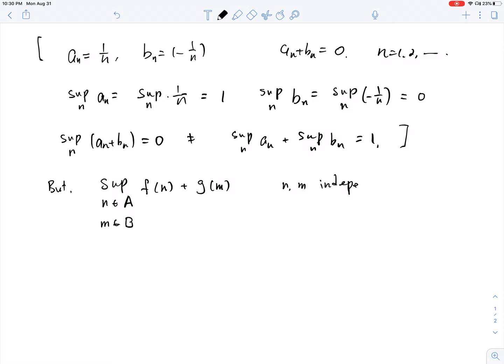And then this is going to be equal to supremum n inside A of f(n) plus supremum m inside B, g(m). So what it means is that if you have in the sum, you are taking the supremum over independent variables. And then you can use the distributive law. And that's what we have over there.